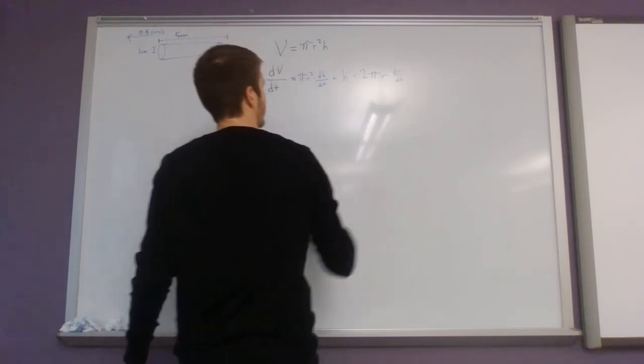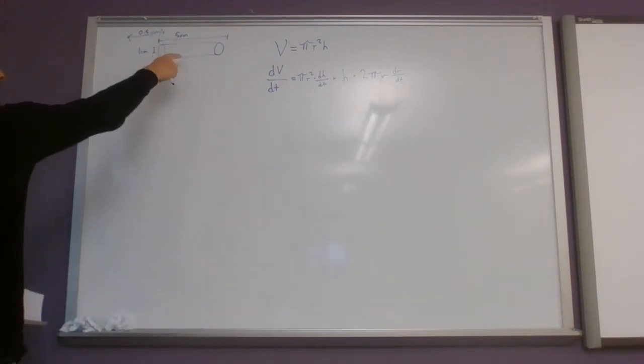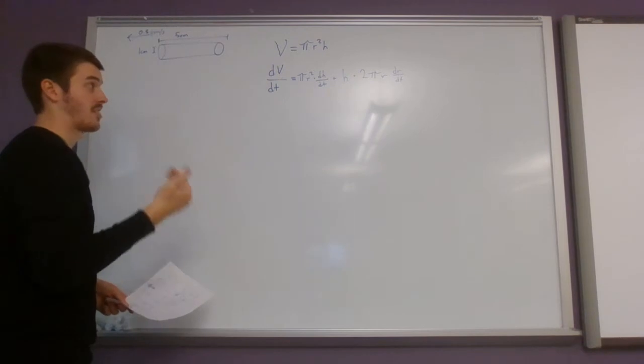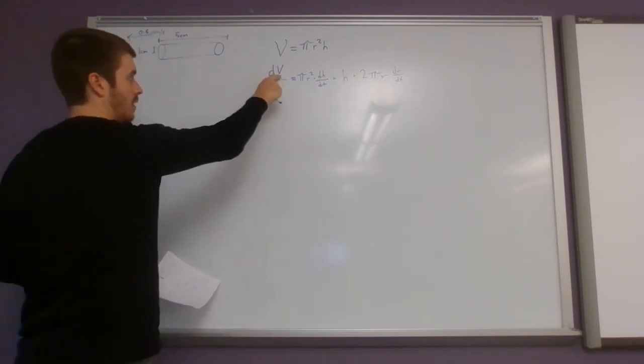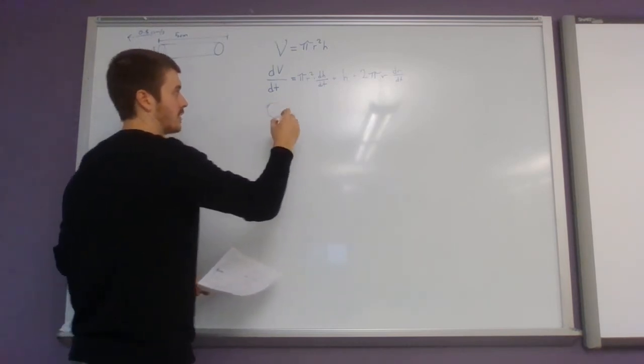Okay, so what we're then gonna be able to do is say, again, the amount of dough we have is constant. It doesn't change. So our rate of change of volume is going to be zero, which is very helpful.